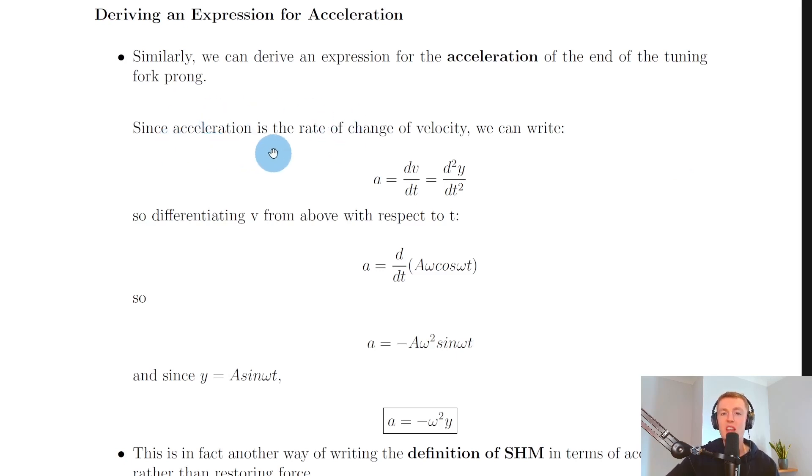Since acceleration is the rate of change of velocity, we can write a equals dv by dt equals d squared y by dt squared. That is, acceleration is the first differential of velocity but the second differential of the displacement with respect to time.